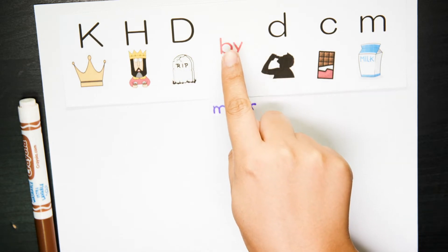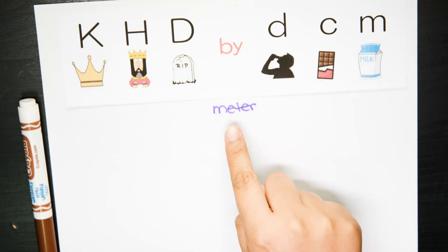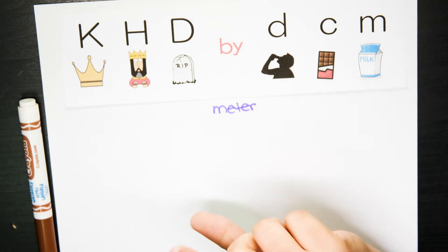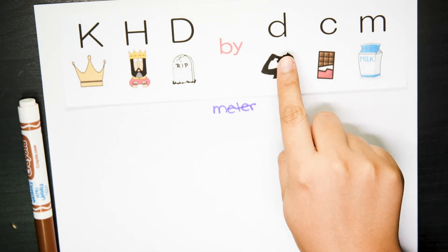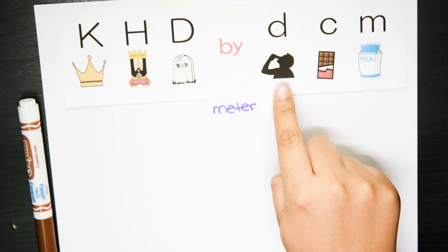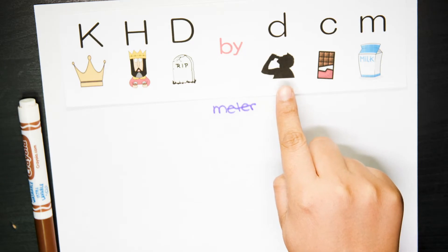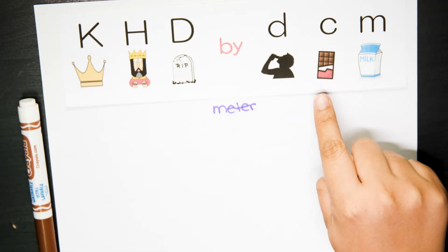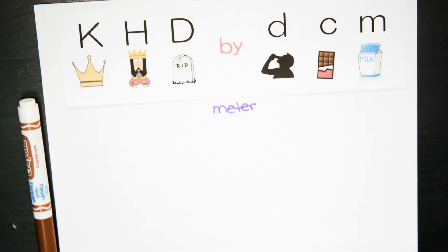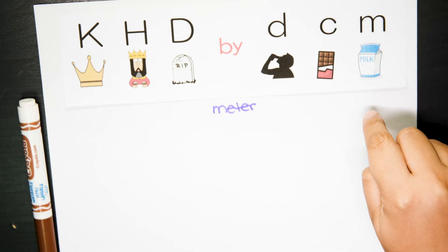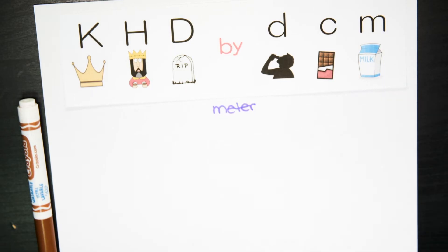Then 'by' will be your base, which is the meter, and then these three are the smallest units. That's why they are in lowercase. This lower D means decimeter, this lower C means centimeter, and this lower M means millimeter.